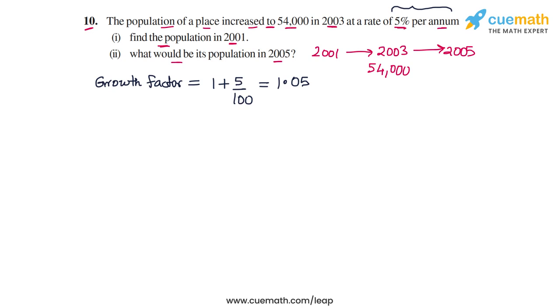So what this means is that if you have the population of one year, the population of the next year is simply 1.05 times the previous year's population. For example, if your population this year is 100, then the population next year will be 100 into 1.05, so it will be 105. The population the year after will be 105 into 1.05 and so on. You can find the population for any year.